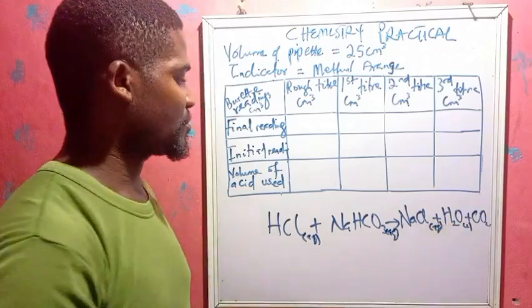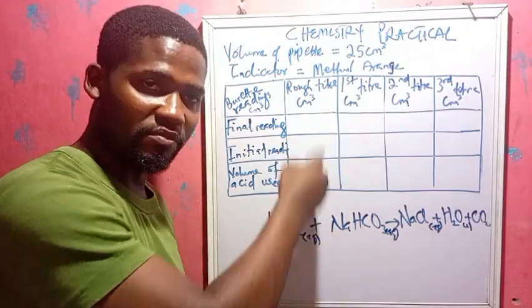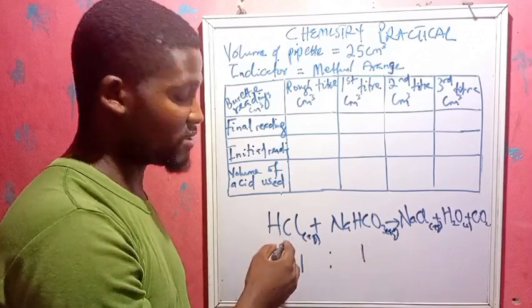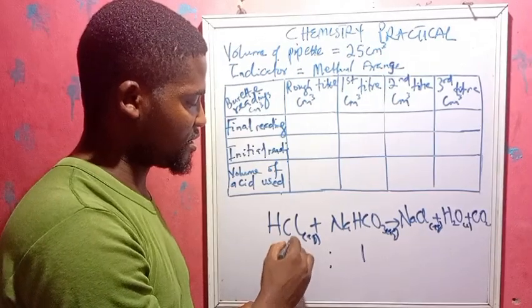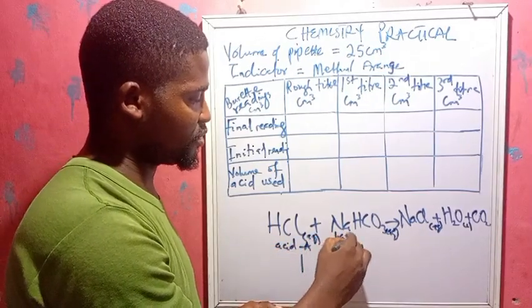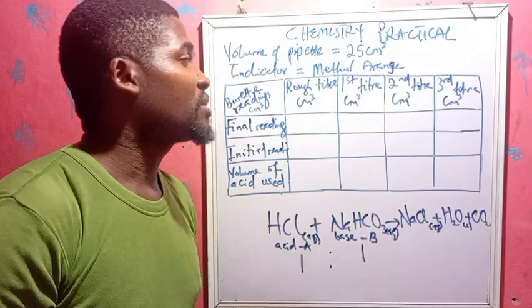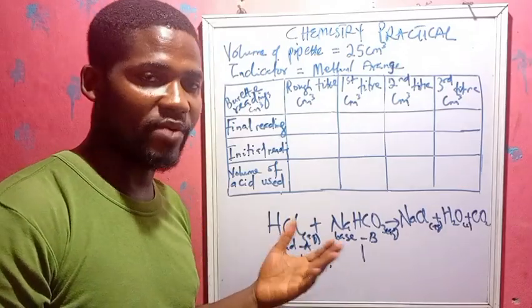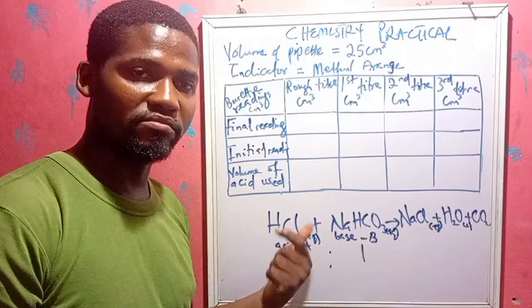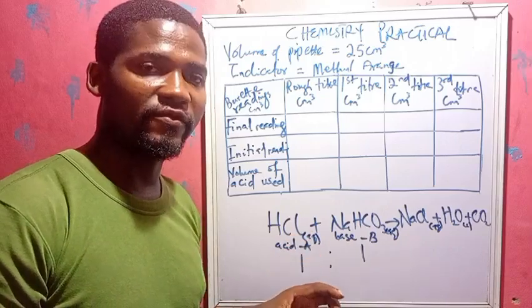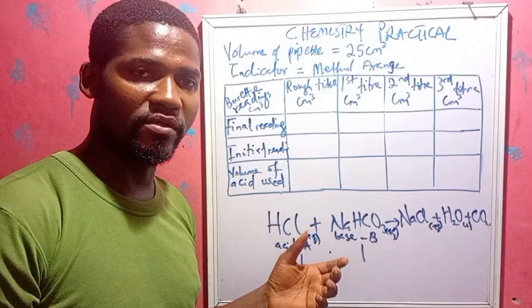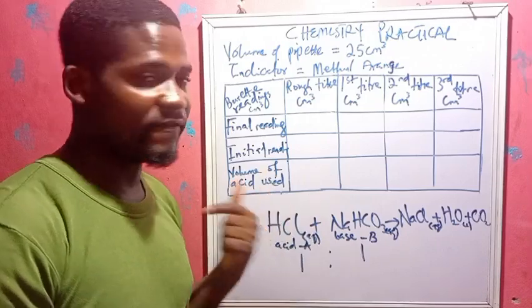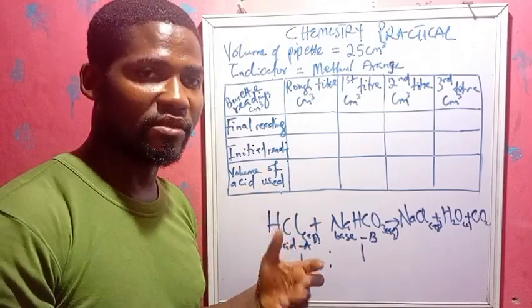From this equation, take note that the reacting mole ratio is one to one. This is the acid, also known as 'A', and this is the base. Now, to start a titration, know the precautions: you have to place a white tile below the conical flask, the burette has to be erected straight — vertically erect.